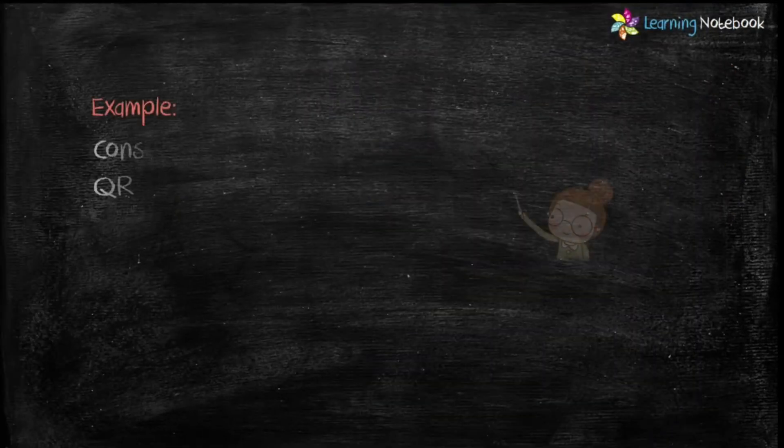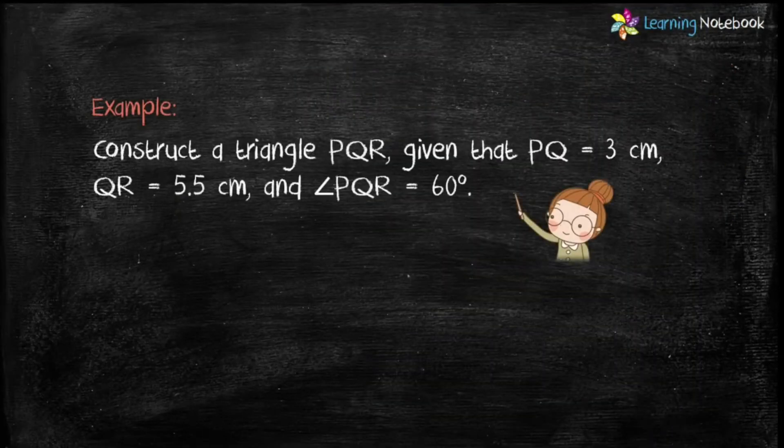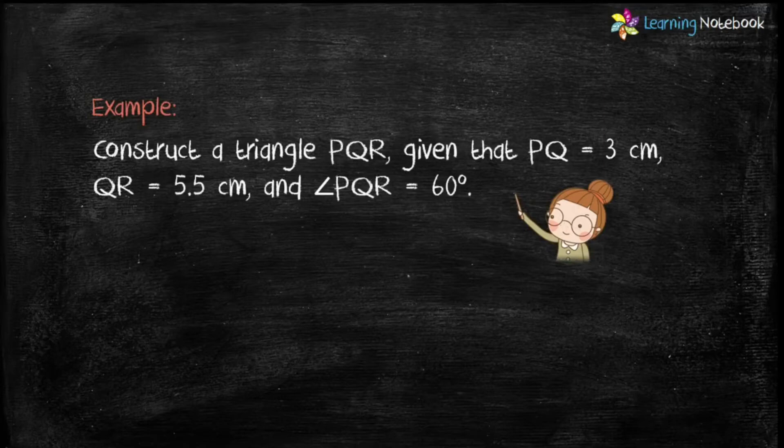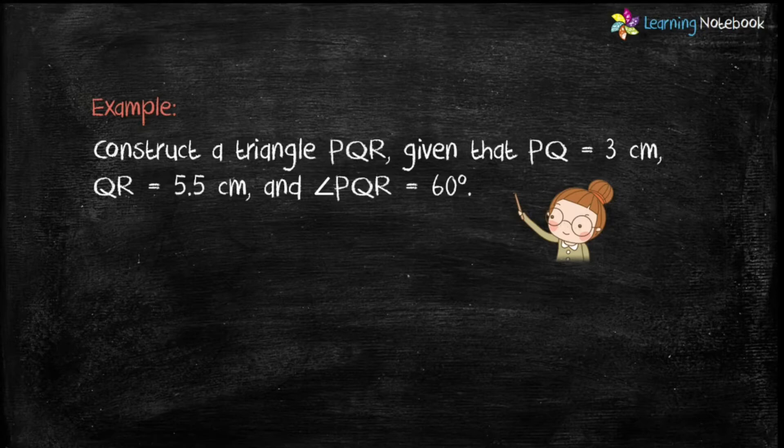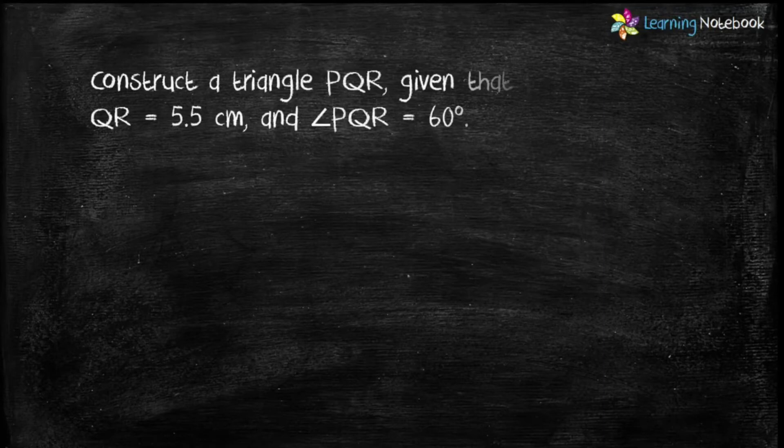Question is, construct a triangle PQR given that PQ equals to 3 cm, QR equals to 5.5 cm and angle PQR equals to 60 degree. Let's start the construction.